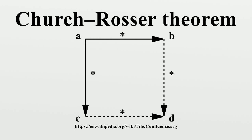The theorem was proved in 1936 by Alonzo Church and J. Barclay Rosser, after whom it is named. The theorem is symbolized by the diagram at right. If term A can be reduced to both B and C, then there must be a further term D to which both B and C can be reduced.